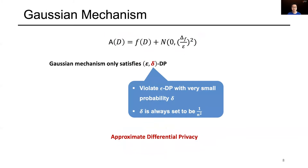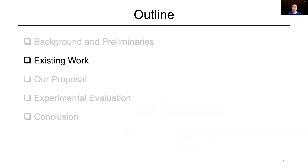Another widely used mechanism is adding Gaussian noise to the real value. Note that the Gaussian mechanism only satisfies epsilon-delta DP. Here, delta means the algorithm will violate epsilon-DP with very small probability delta. Thus, we also call the Gaussian mechanism approximate DP.